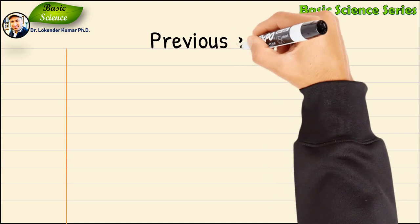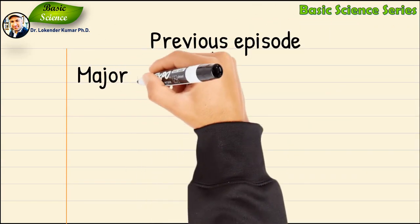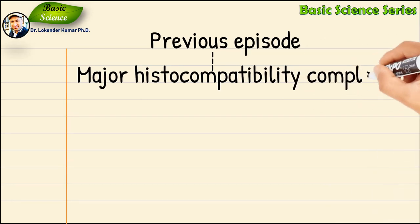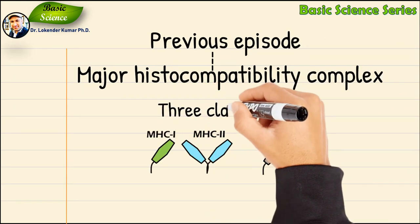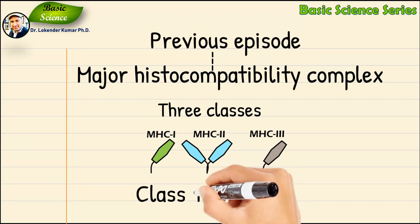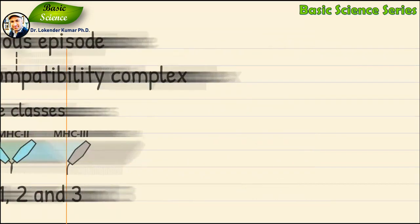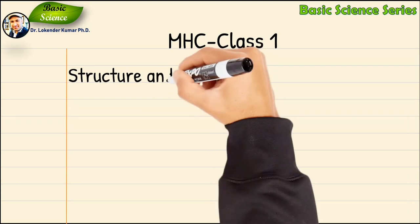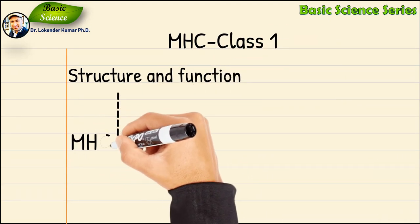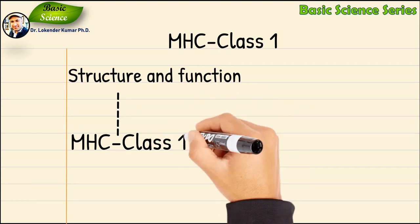In the previous episode we discussed about the major histocompatibility complex in general. We also identified that there are three classes of major histocompatibility complex: class 1, class 2, and class 3. In this presentation we will focus on the structure and function of major histocompatibility complex class 1 molecule in detail.